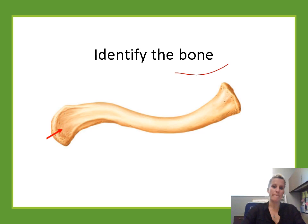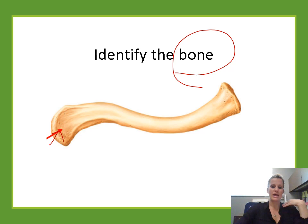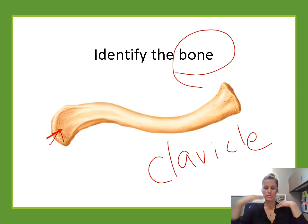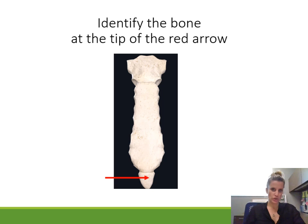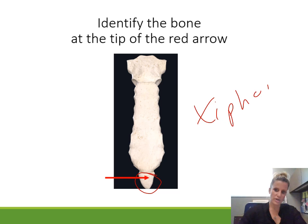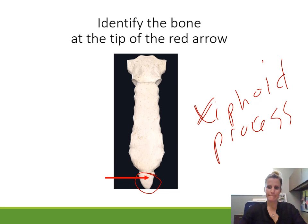Identify the bone. Always read the questions — if you just name the end of it, that's wrong. This wants the name of the bone, and this is the clavicle. Also, the sternum has three parts: the manubrium on top, the body in the middle, and this is the very bottom — this little blade that sticks out is the xiphoid process.